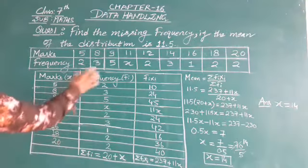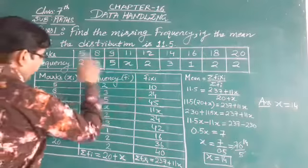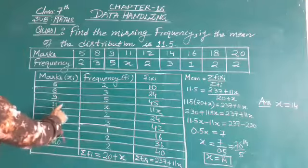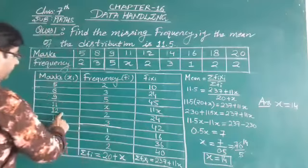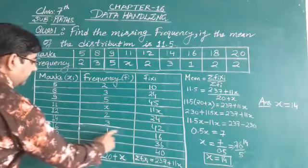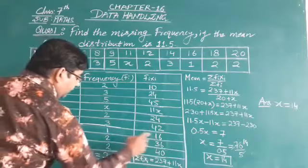Now we will multiply all the fi corresponding to xi. That is, 5 times 2 is 10, 8 times 3 is 24, 9 times 5 is 45, 11 times x is 11x, 12 times 2 is 24, 14 times 3 is 42, 16 times 1 is 16, 18 times 2 is 36, 20 times 2 is 40.